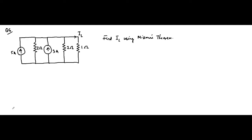Here we are with the sixth question on Millman's theorem. This circuit figure is slightly different from the circuit diagrams we have solved previously. Those were voltage sources along with resistances connected in series, and those voltage-resistor combinations were connected in parallel. But here we have current sources along with resistors — multiple such arrangements connected in parallel. So this is a parallel current sources circuit, and we have to find the load current IL.